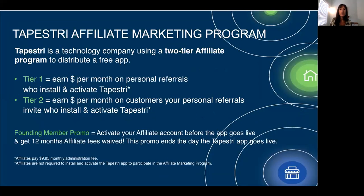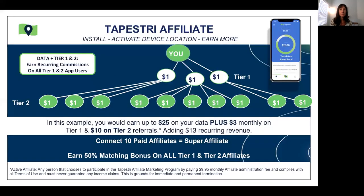For those who want to really increase your earnings and be able to earn not only on your personal referrals but on whoever they turn around and tell about Tapestry, once they've installed the app, you'll earn on two tiers when you're an active affiliate. All active affiliates do pay a $9.95 admin fee every month. But for anybody who wants to participate as an active affiliate starting now before the app launches, we have waived 12 months of affiliate fees — you simply activate for a one-time $9.95, and then we waive the next 12 months. That promotion ends the day the app goes live.